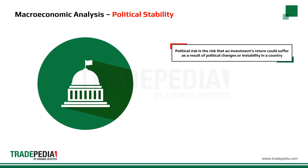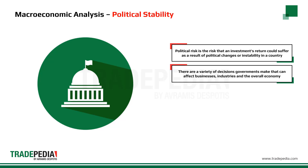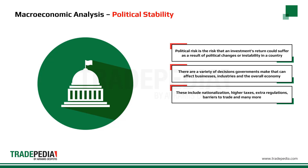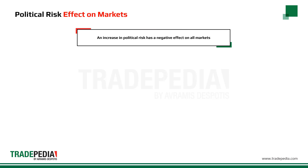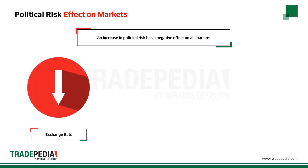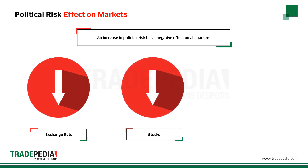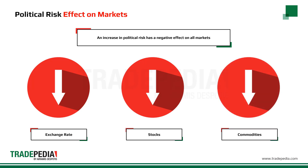Political risk is the risk that an investment's return could suffer as a result of political changes or instability in a country. Governments make a variety of decisions that can affect individual businesses, industries, and the economy as a whole, including nationalization, higher taxes, extra regulations, and barriers to trade. For instance, the UK's decision to leave the EU, or Brexit, and the election of Donald Trump as US president created increased concern about political risk. An increase in political risk has a negative effect on all markets — declining confidence leads to a drop in currency value, stock prices decrease, and most commodities drop in value, with the exception of gold, which serves as a safe haven in times of uncertainty.